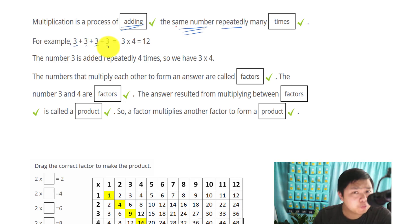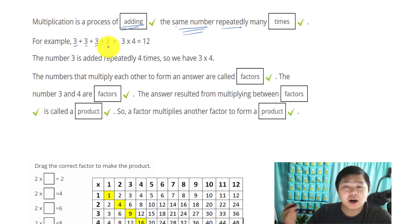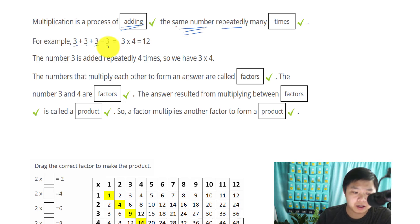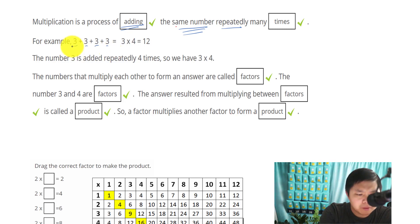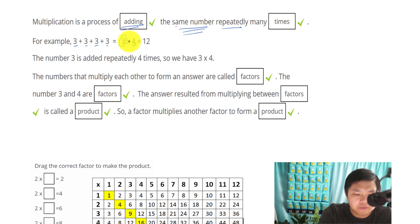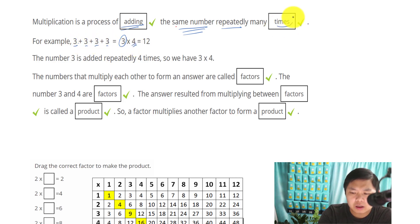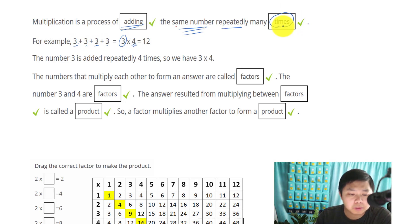But what happens when you have to add 3s 100 times? That would take forever to write. So we use multiplication to write it very quickly and do the math very efficiently. So instead of writing 3+3+3+3, we write 3 times 4, because we're adding 3 four times. That's why the term 'times' is used in multiplication.